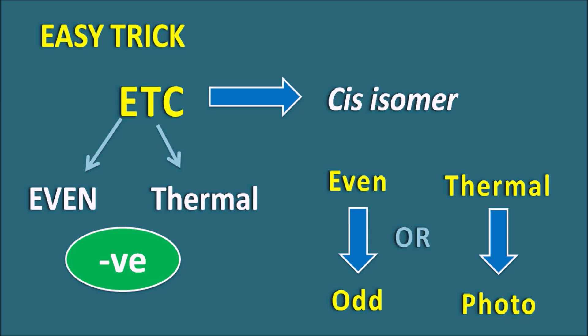We can use this easy trick, but in order to understand it properly, let us first see the different types of configurations that can be observed with electrocyclic reactions, and then we will apply this trick to guess the right configuration of the product.